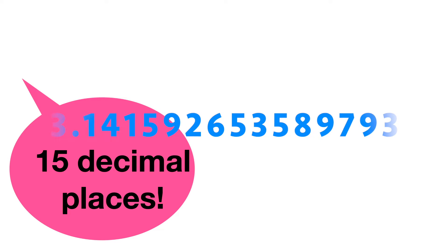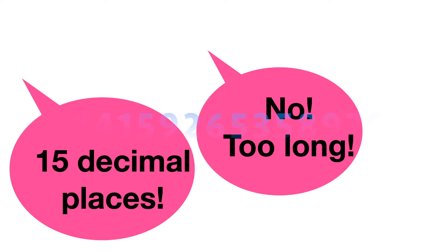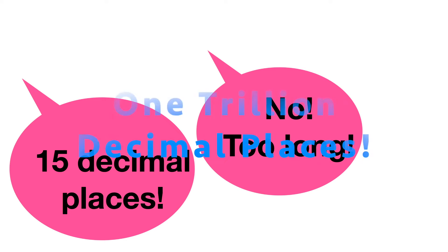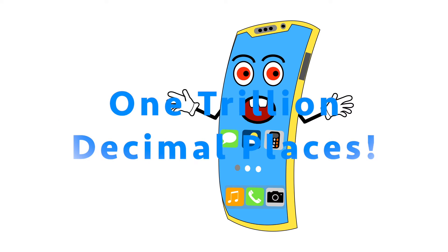Can you remember? The value is actually much longer. The decimal value of Pi has been calculated up to 1 trillion digits, and the calculation never ends.